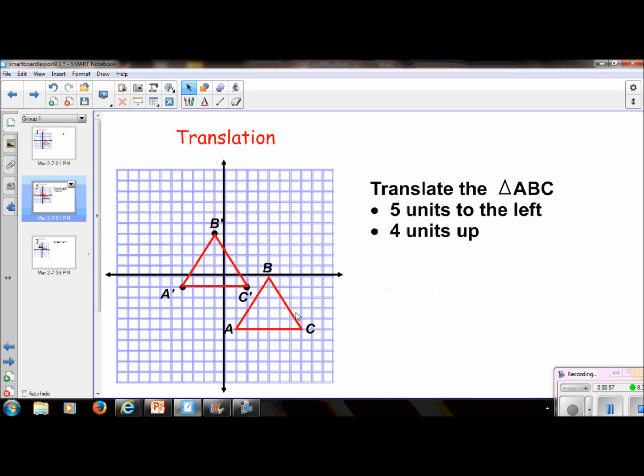And then after doing the exact same thing to point C, I've moved it 5 units to the left and 4 units up. So this is my C prime. And then of course, I would connect all these and then I would have my new triangle and it is called the image. This is called the preimage.